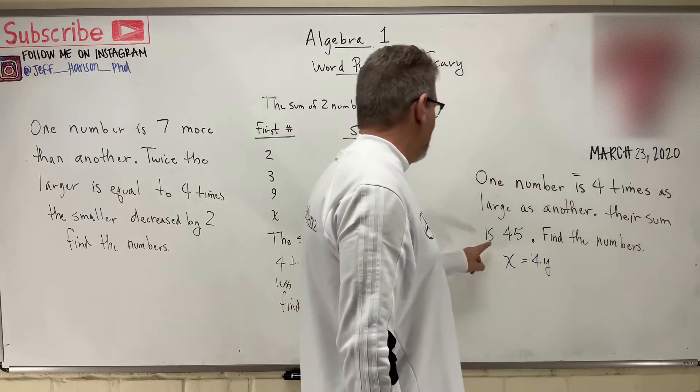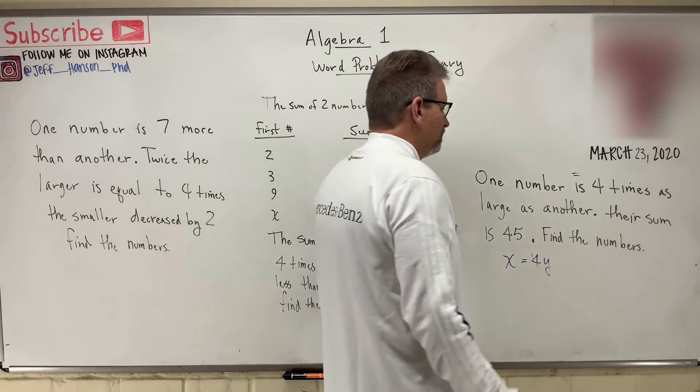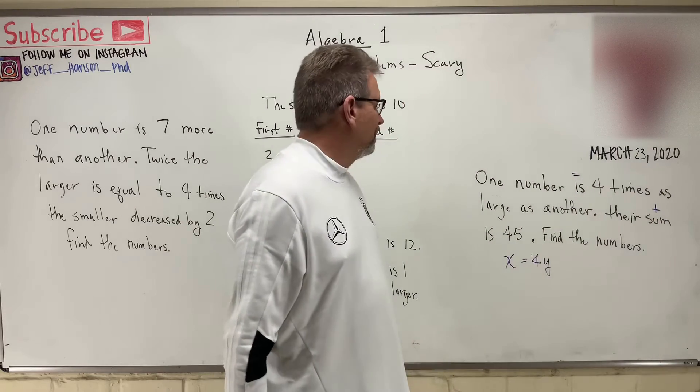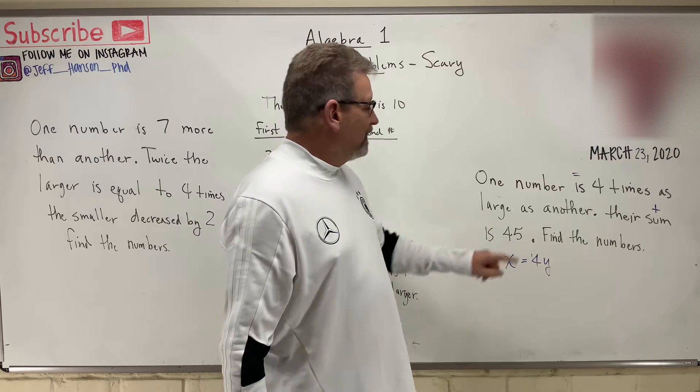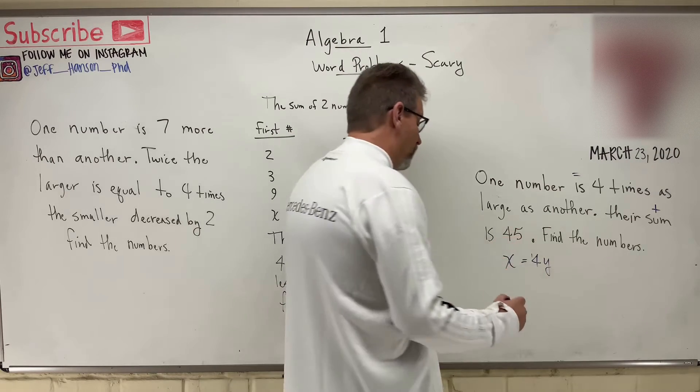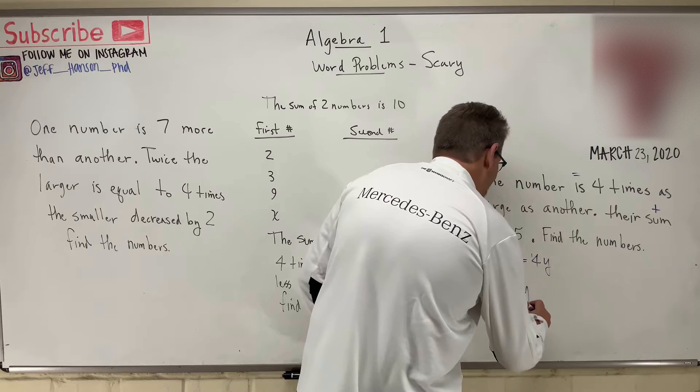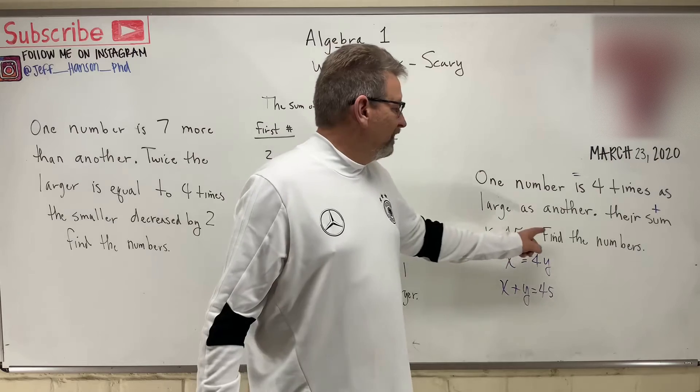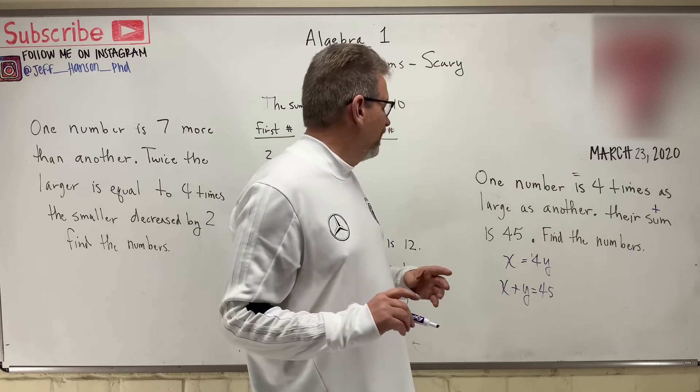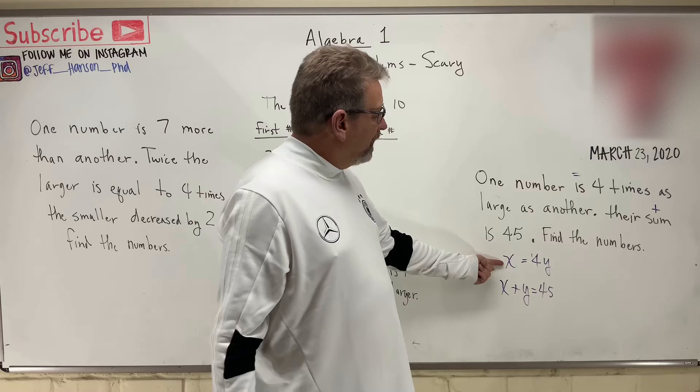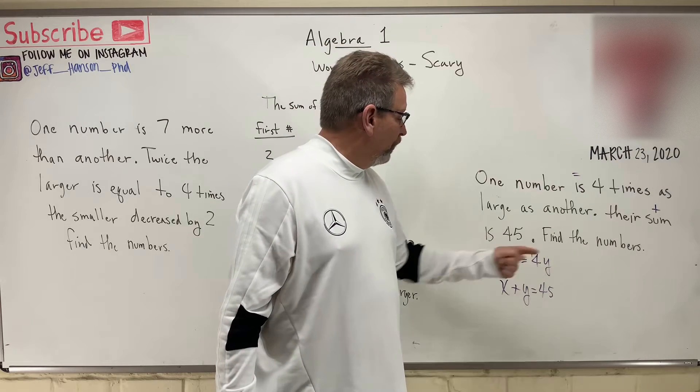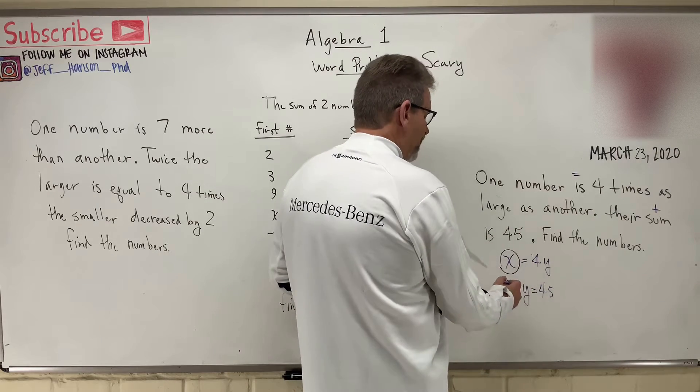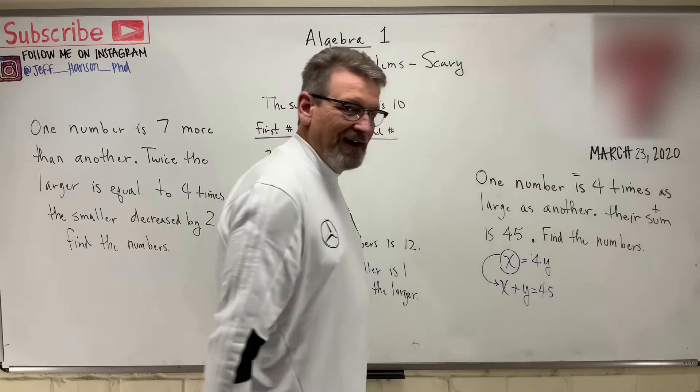Their sum is 45. The word sum means to add up, that means addition. So if you add the two numbers together, you get 45. So here's another equation: X plus Y is equal to 45. Now it says find the numbers. Here's where algebra is going to kick in. We already know what X is equal to. X is equal to four Y. So let's just plug him in to that other equation right there.